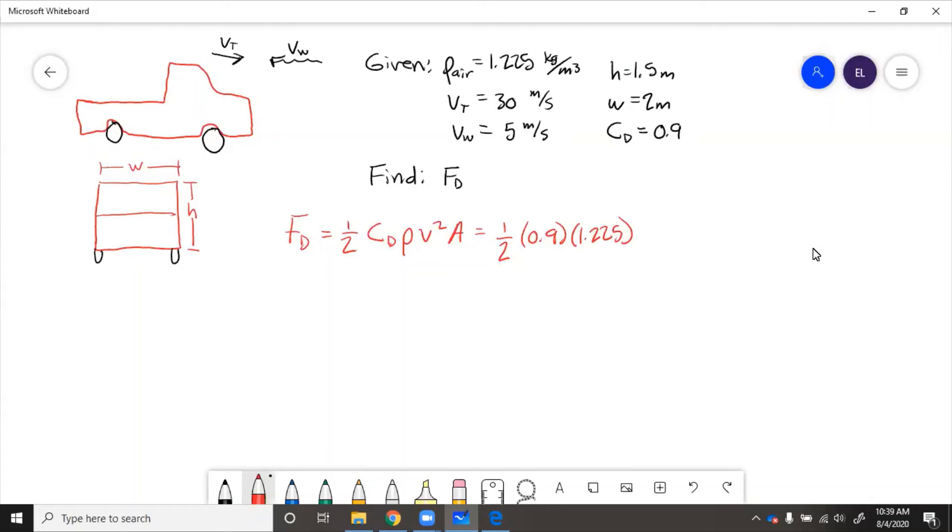And then what should we use for v squared? Well v has to be the relative velocity of the truck and the wind. So v equals velocity of truck minus velocity of wind because it's truck relative to wind, v truck minus v wind. So that is going to be 30 minus negative 5 equals 35.